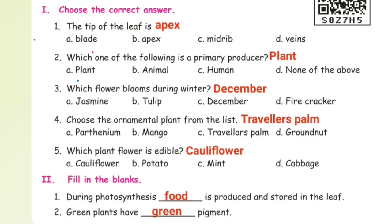Choose the correct answer. First one: the tip of the leaf is dash. The tip of the leaf, the answer is apex. Second one: which one of the following is a primary producer? The answer is plant.